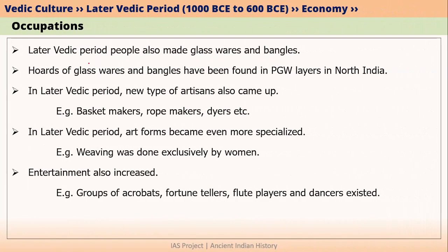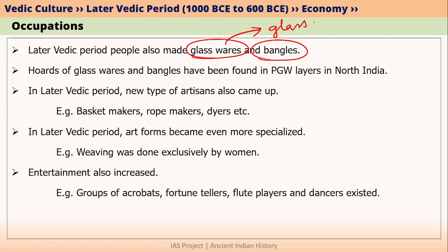In the later Vedic period, people also made glassware as well as bangles — particularly glass beads. Such bangles and glass beads have also been found in PGW layers in North India.